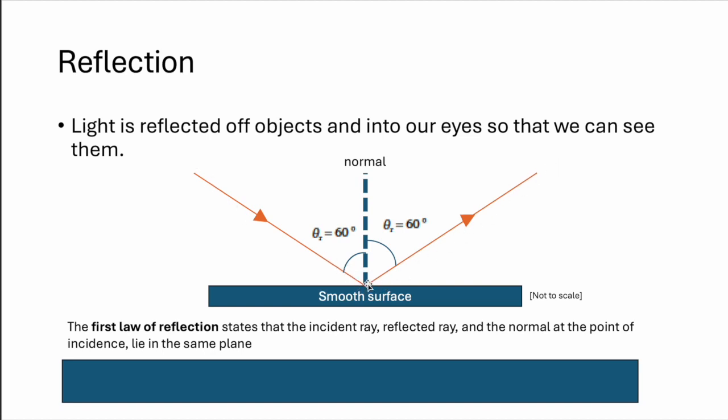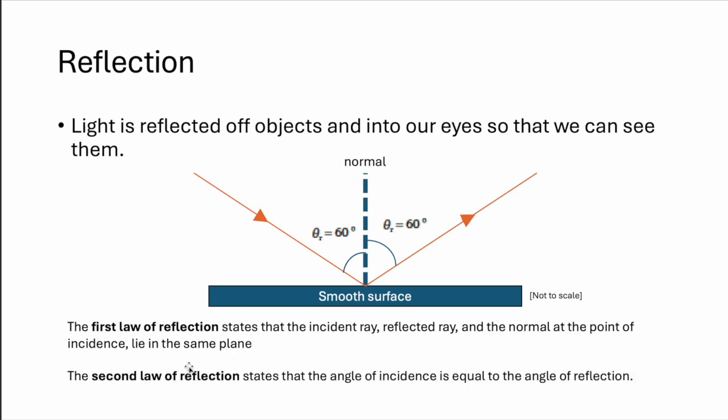From this, we can already describe two laws of reflection. Incident ray, reflected ray, normal all light on the same plane. Incident angle, reflected angle will be the same.